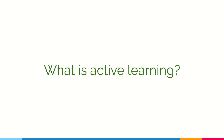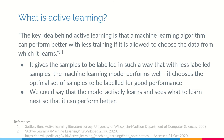Now let us look at what active learning is. The key idea behind active learning is that a machine learning algorithm can perform better with less training if it is allowed to choose the data on its own. The machine learning algorithm itself should choose what data to label so that it can perform optimally, reaching good results fast with very little labeling.